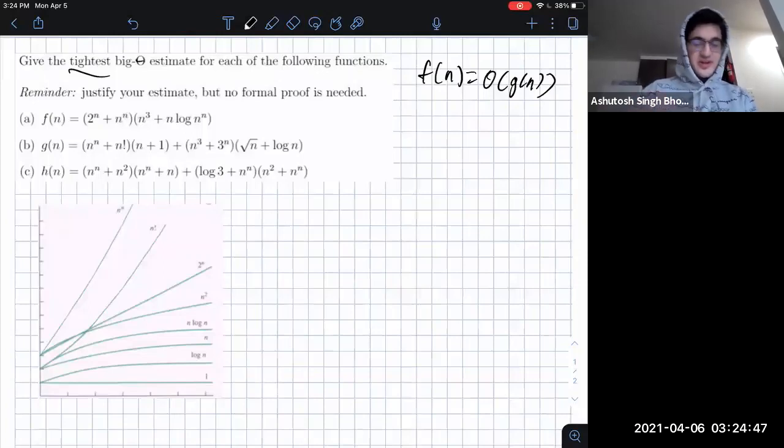And really what that means at the end of the day is big theta, but we just say tightest big O because why not? So let's just take a look at this problem then.